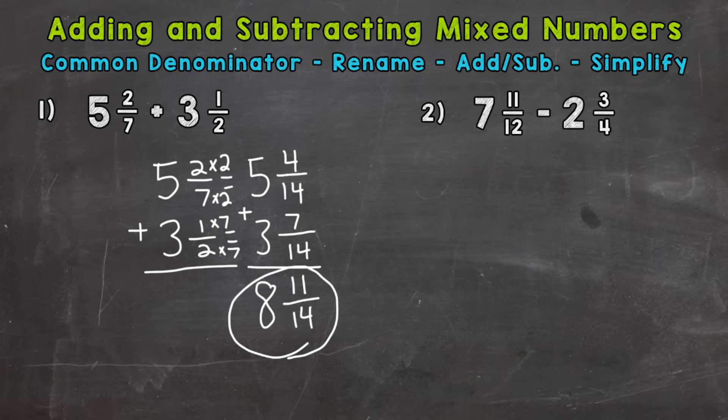Let's move to number 2, where we have subtraction. Subtraction is the same exact thing that we just did, but instead of adding, we're going to subtract. So let's line up vertically, up and down. So 7 and 11 twelfths minus 2 and 3 fourths.